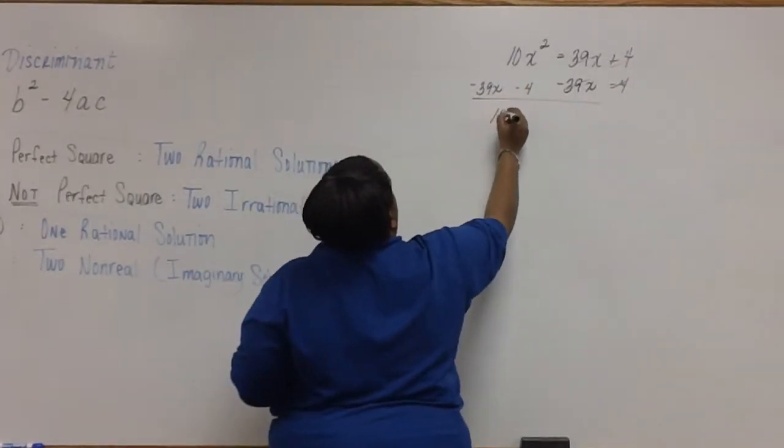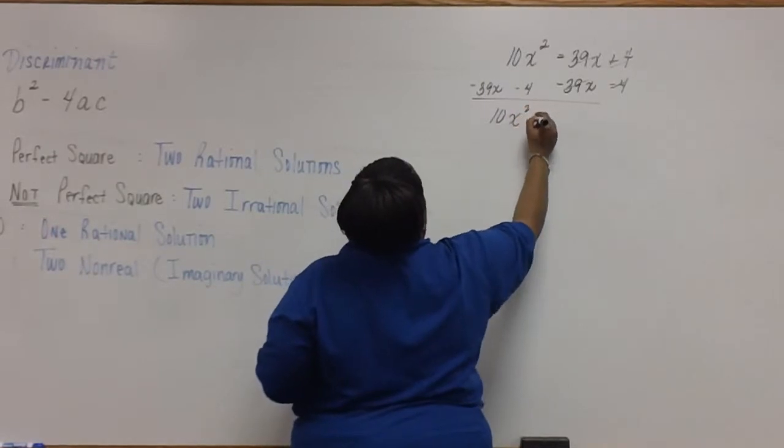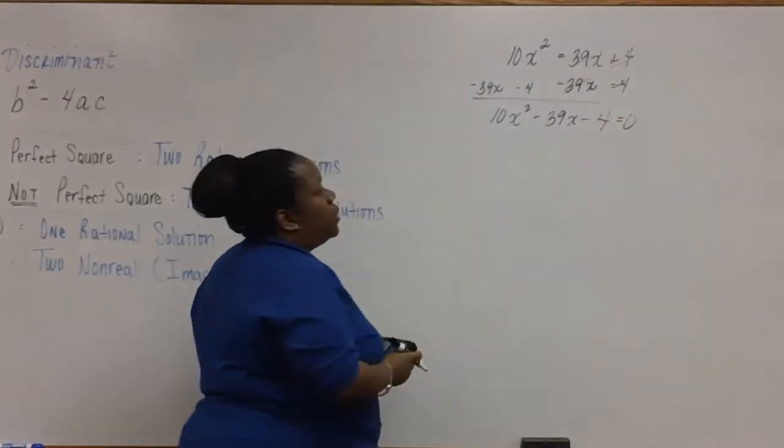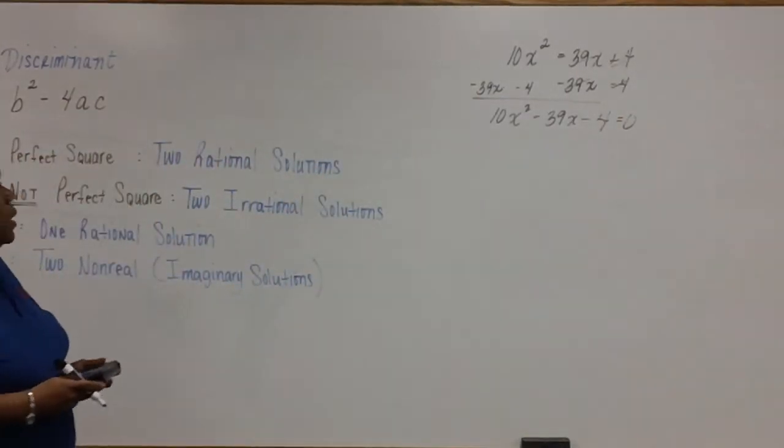Now we have 10x squared minus 39x minus 4 equals zero. Now we're ready to use the discriminant.